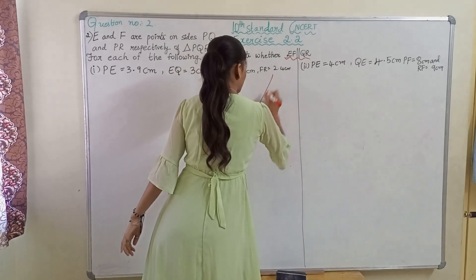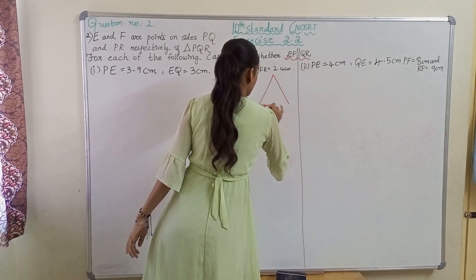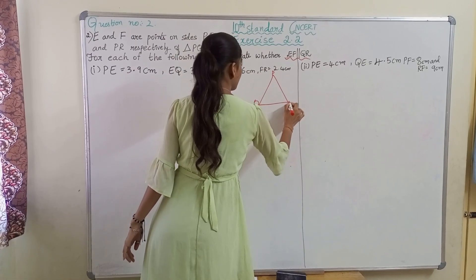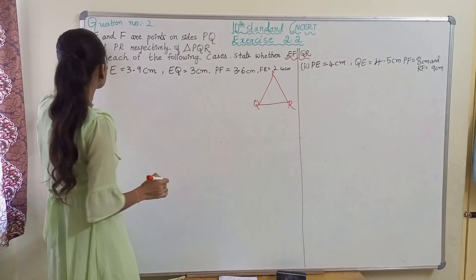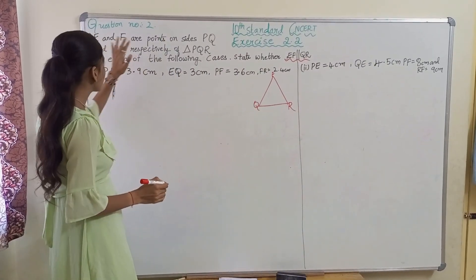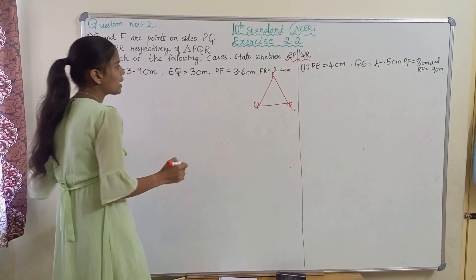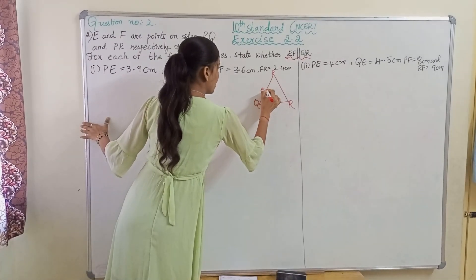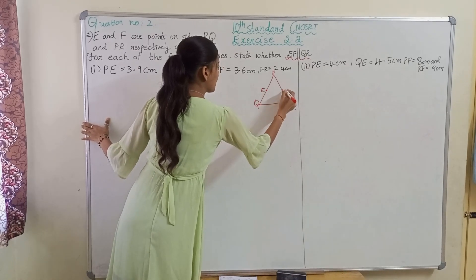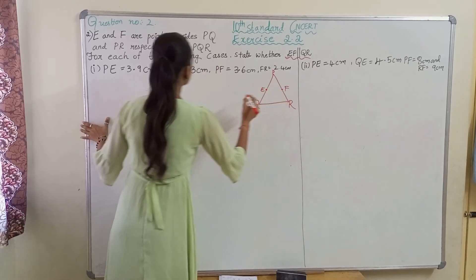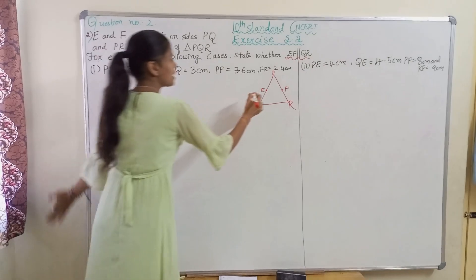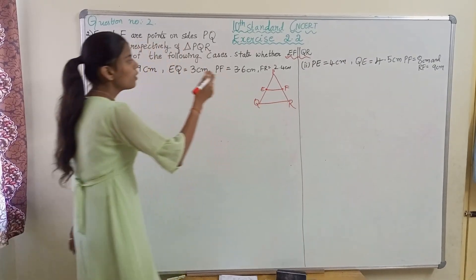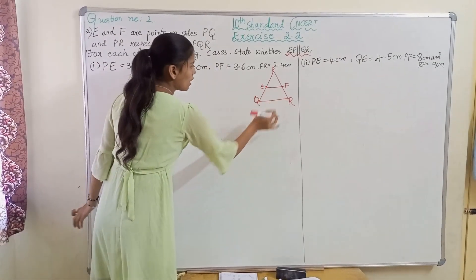Let us draw triangle PQR. The given data is: E and F are the points on sides PQ and PR respectively. So E is on PQ and F is on PR. We have to state whether these points — let us join EF — we have to prove that EF is parallel to QR.